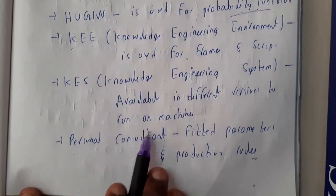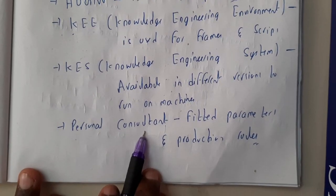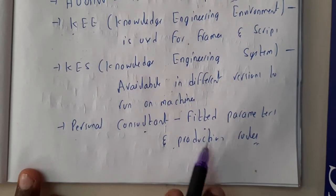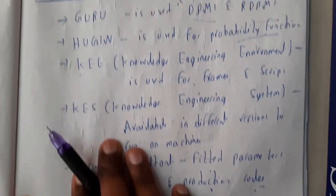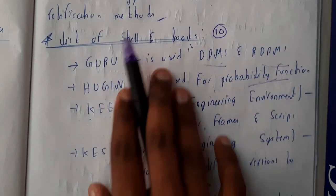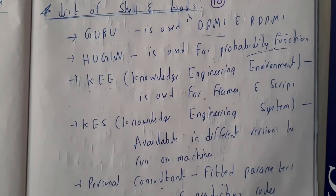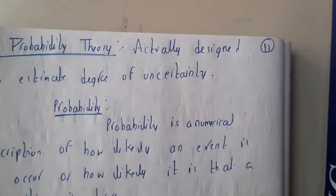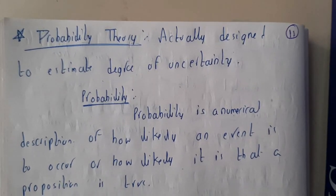KES is available in different versions to run on any kind of machine — personal consultant, field parameter, and production rules. I just went through a website and got these; there are many lists but I selected only a few. So these are some shells and tools. In the next lecture we are going to start probability theory. Thank you, thanks for watching.